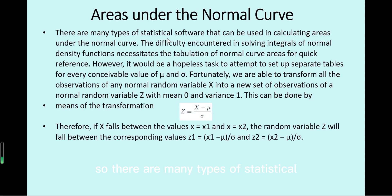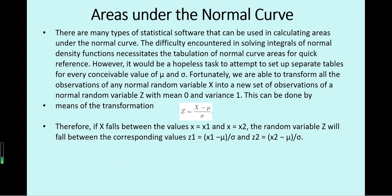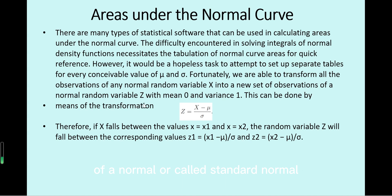There are many types of statistical software that can be used for calculating areas under the normal curve, and thus the probabilities. Due to the difficulty in solving integrals of the normal density function, tabulation of normal curve areas is also used for quick reference. For this purpose, we transform a normal random variable into a standard normal random variable called z, with mean 0 and variance 1.